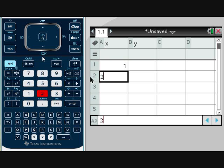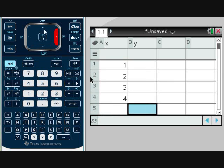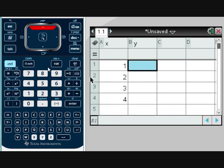My values that I'm going to use are going to be 1 for X, 2, 3, and 4. Then we're going to start inputting our Y values: 1, 3, 5, and 7.